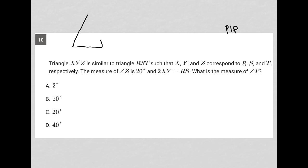I tend to end up drawing triangles that look like isosceles triangles, but I recognize that I can always change this if I need to. If I call this XYZ, then this would be RST, in the same order.